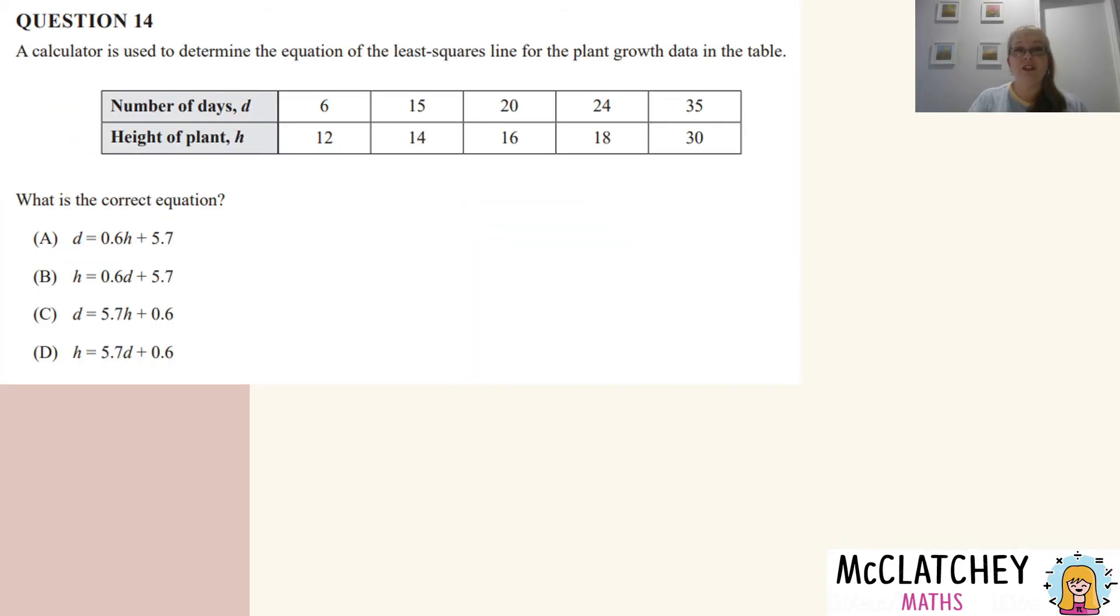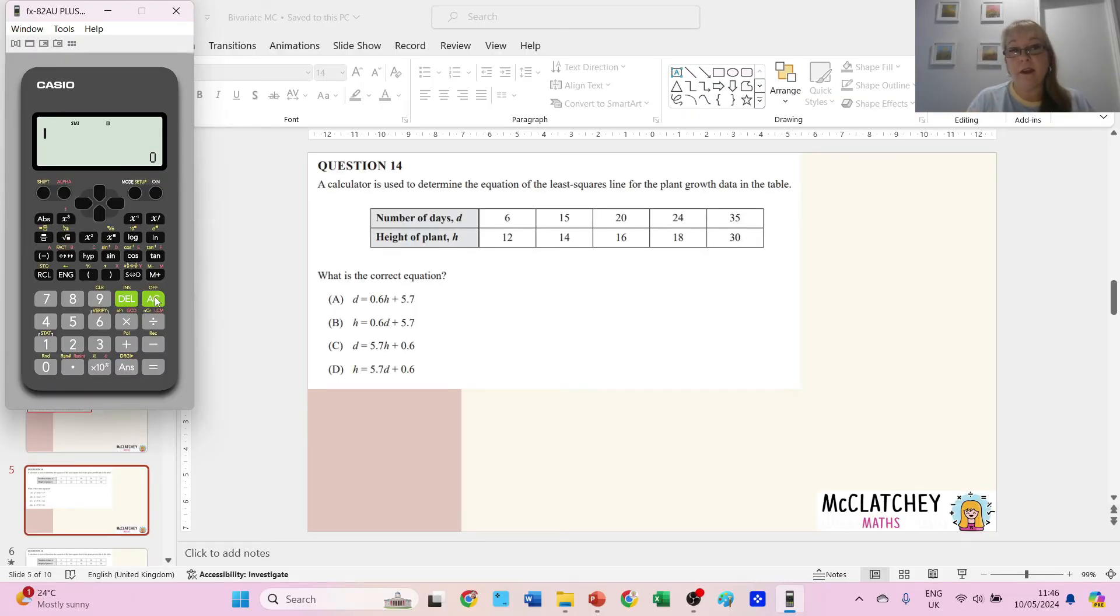Last one, question 14. A calculator is used to determine the equation of the least squares line for the plant growth data in the table. So that means we actually need to pull our calculator out. Now, as you know, the Casio is my favorite calculator. It's just the one I'm really familiar with. I am aware that there's lots of other different calculators out on the market. So you should be familiar with what your calculator does. But I'm going to demonstrate today on a Casio.